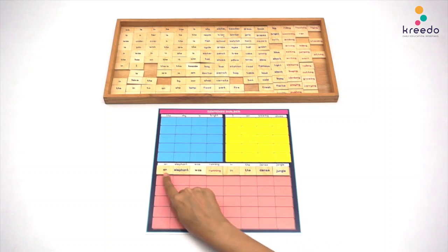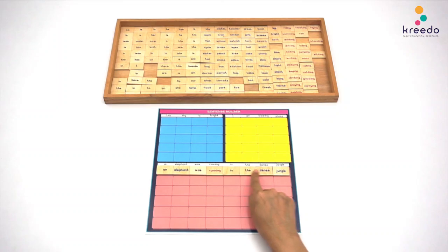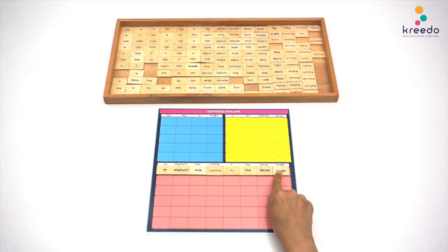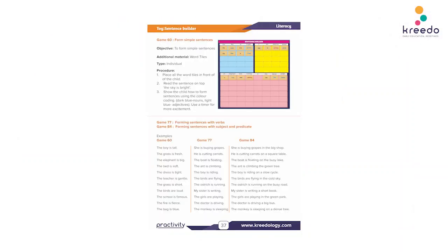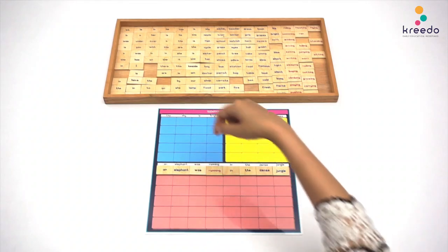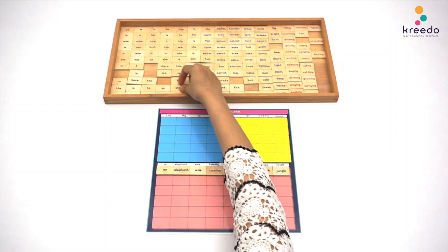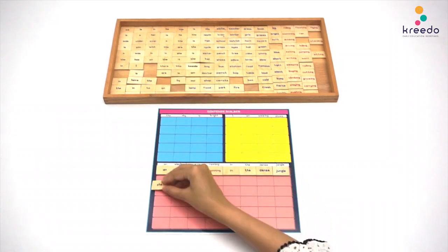The child points to each word tile and reads the sentence: An elephant was running in the dense jungle. Form more sentences mentioned on page number 37 of the instruction manual. The child reads the first word: she. The child searches for its word tile. The child places its word tile on the chart.